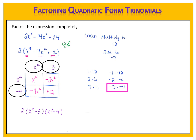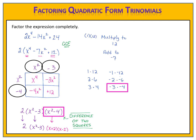Don't forget the greatest common factor of 2 from earlier in the problem. Now I look at each factor. Do I have any greatest common factors in either binomial? No. Do I have any differences of perfect squares? Yes — x squared minus 4 is a difference of two perfect squares, and that factors to x plus 2 times x minus 2. Bring down the x squared minus 3 and the 2, and now I have factored completely.